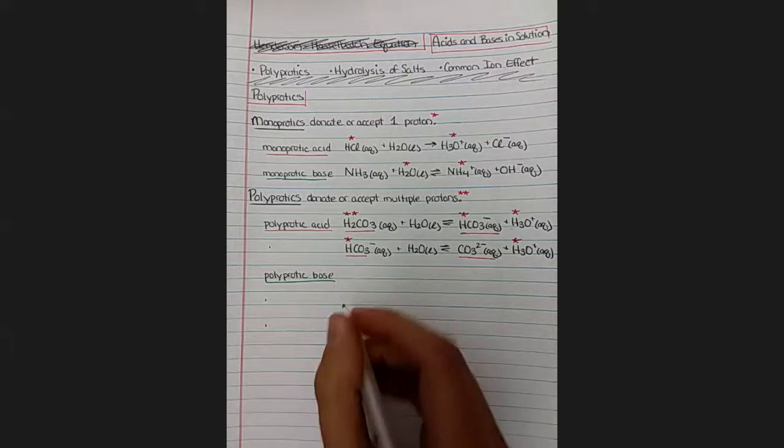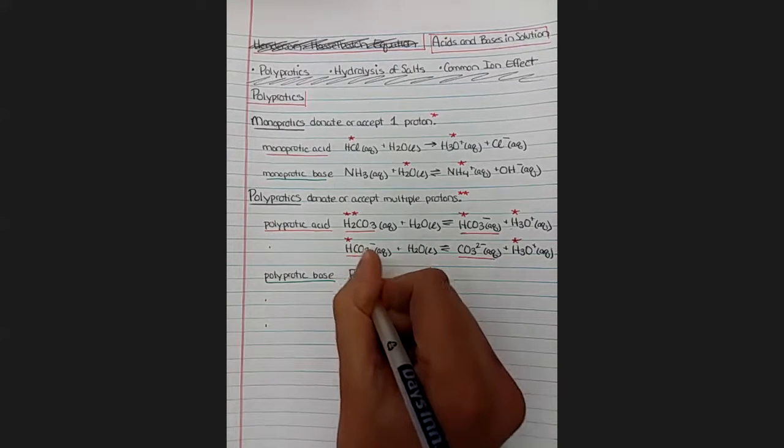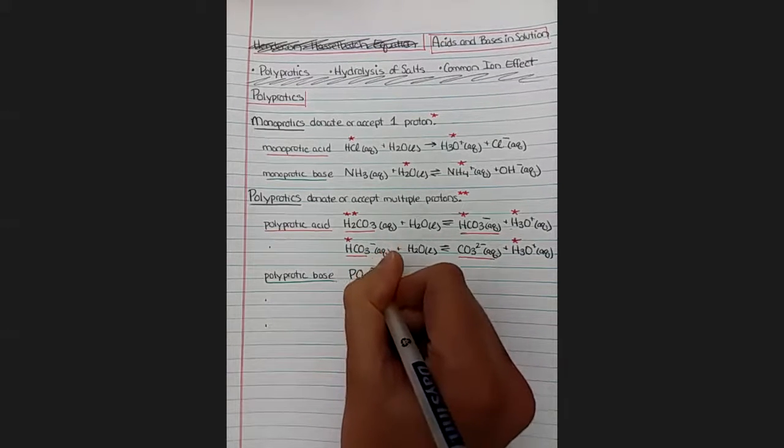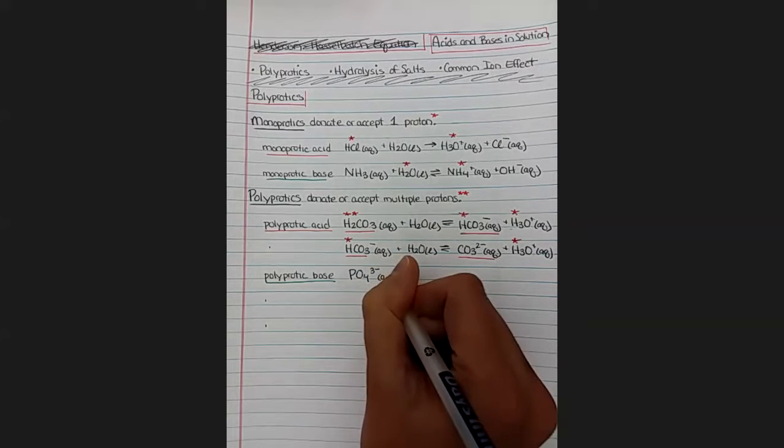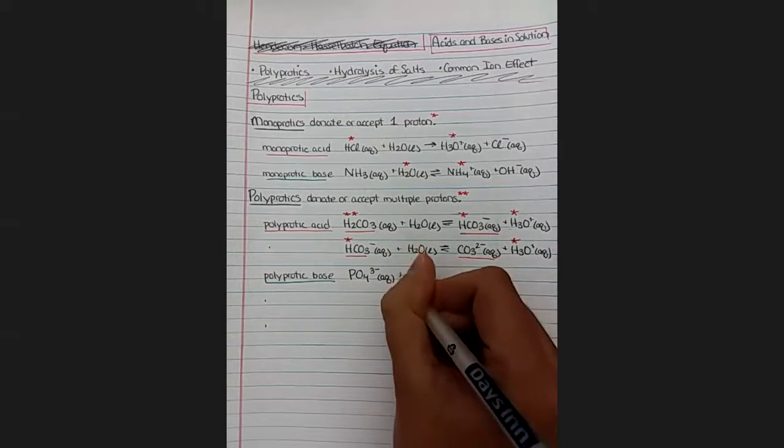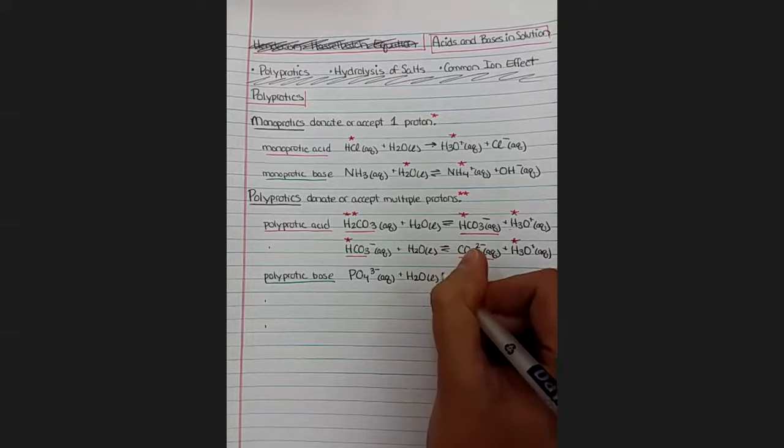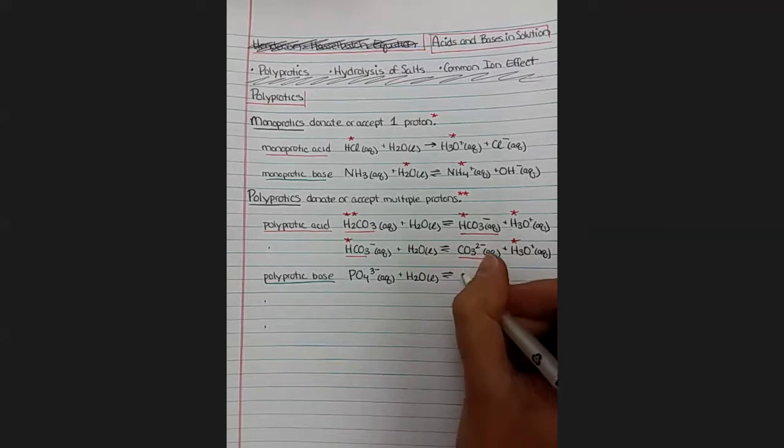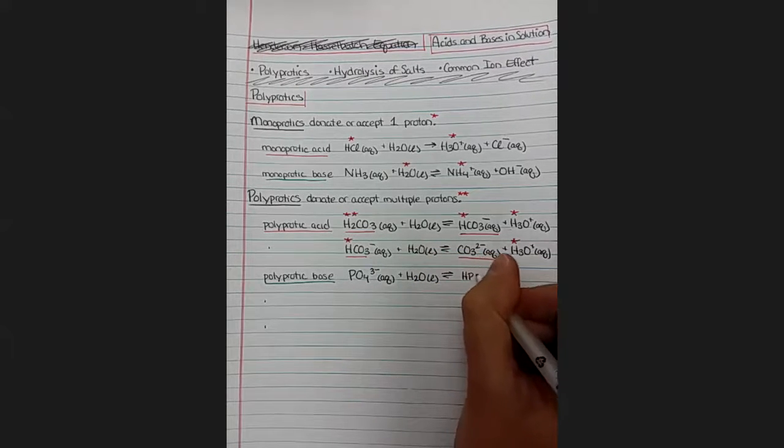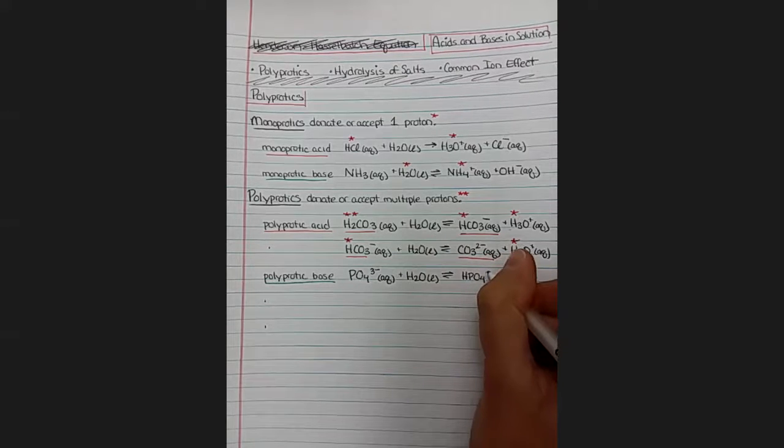And then we can give an example of a polyprotic base. One common example is phosphate. If you take biology, this is relevant to many biological processes passing these phosphates around. So when we protonate phosphate for the first time, we add an H and its charge goes up to two minus.